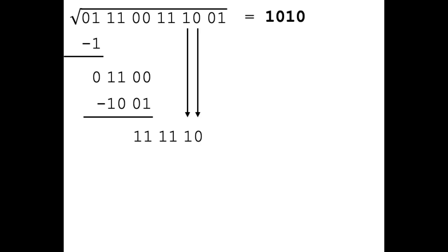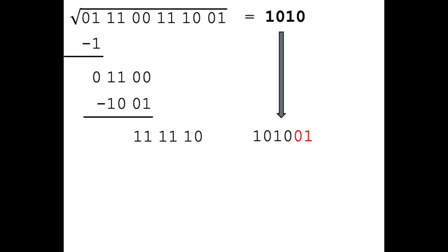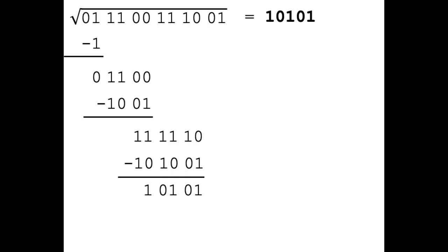And then we pull down the next pair of digits. Like before, we continue by taking the digits we have calculated so far and append the digits 0 and 1 to it. This yields the number 101001. Now we compare the remainder 111110 against the number we constructed, 101001. The remainder is greater than the number we constructed, therefore the next digit will be a 1. Because the remainder was greater than the constructed number, we continue by subtracting the number from the remainder.